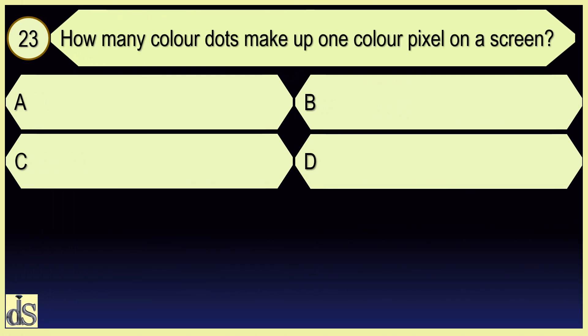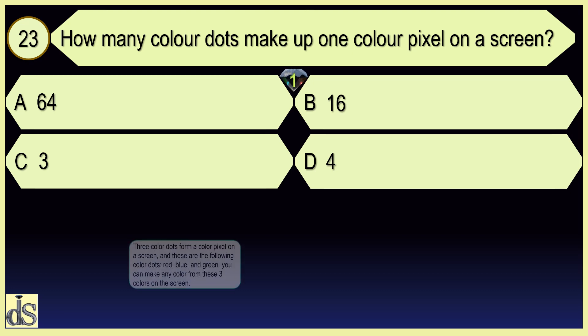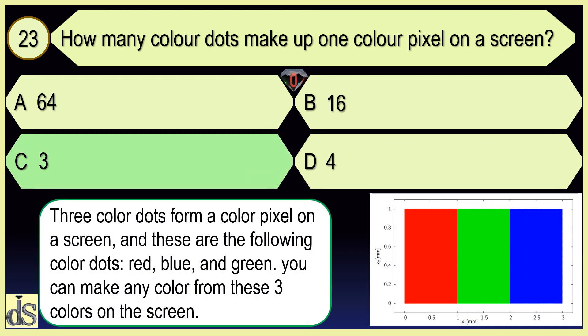How many color dots make up one color pixel on a screen? Three.